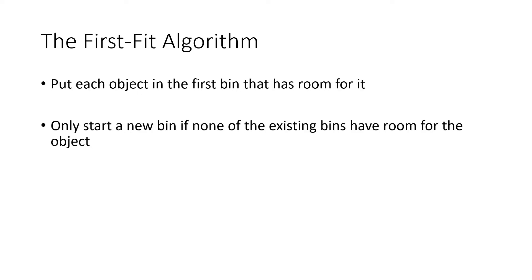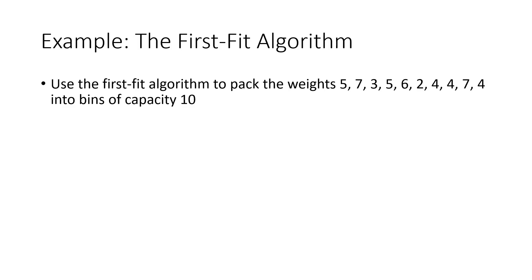Let's start with the first fit algorithm. It tells us to put each object into the first bin that has room for it, and we only open a new bin if none of the existing bins have room. For example, with bins of capacity 10, we start with bin one empty. The first weight is five — bin one has 10 capacity available, so five fits. We put five in, and capacity drops from 10 down to five. Next is seven. Bin one only has five spaces remaining, so we open bin two and put seven there, leaving bin two with a capacity of three.